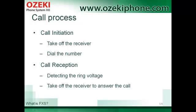Now I would like to talk about the operation of FXS and FXO ports. When you initiate a call, first you pick up the receiver of the FXO device. You can hear the dial tone that the FXS port provides. Then you dial the number on your FXO device and the FXS port forwards it to the service provider. The other phone then detects the ring voltage that is supplied by the FXS device. When you pick up the receiver, you will answer the call.